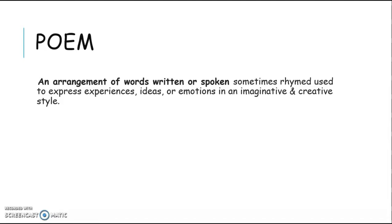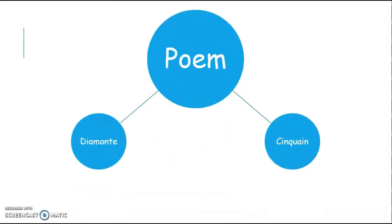So there are two types of poem that we are going to be taking a look at. The first one is Diamante and the second one is Cinquain. Remember guys, you are going to choose either one of these. So the first poem is going to be Diamante.